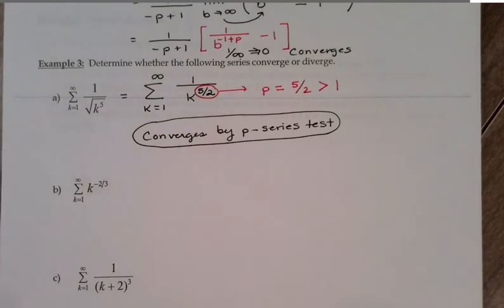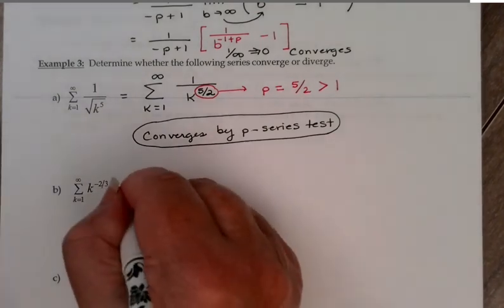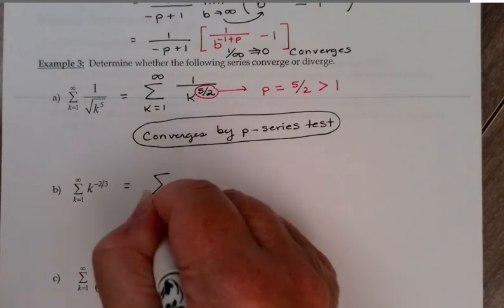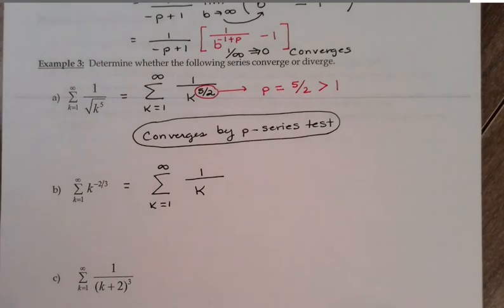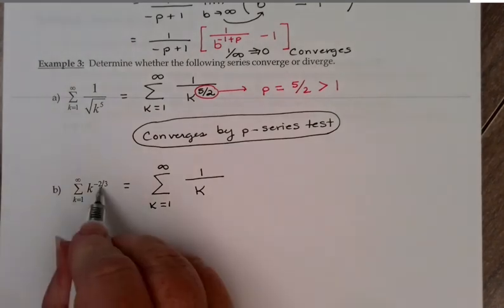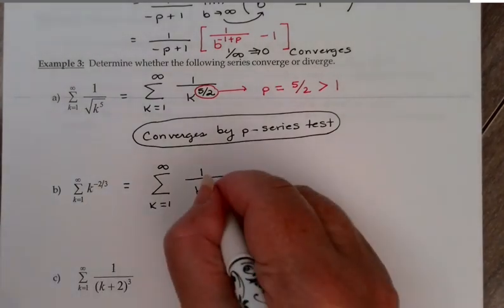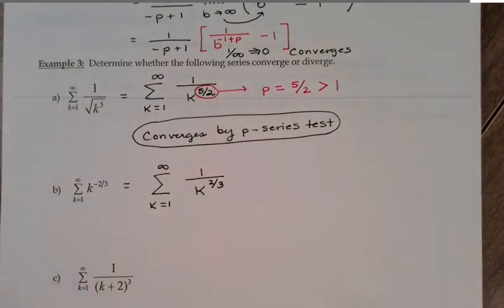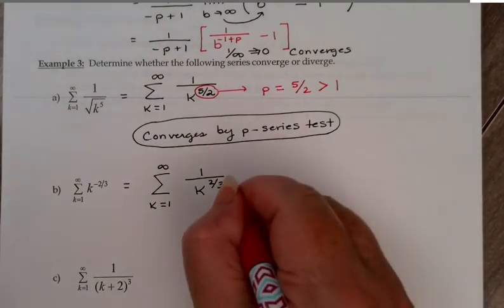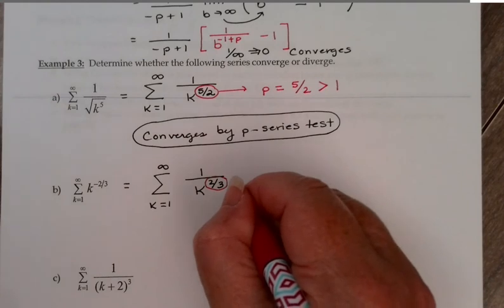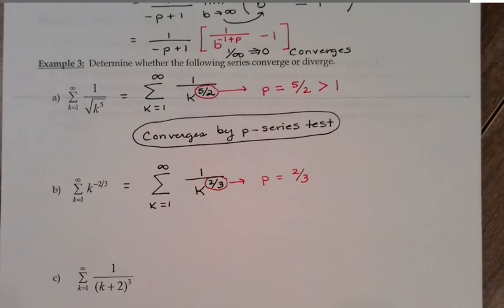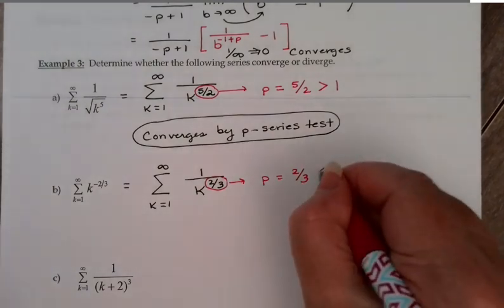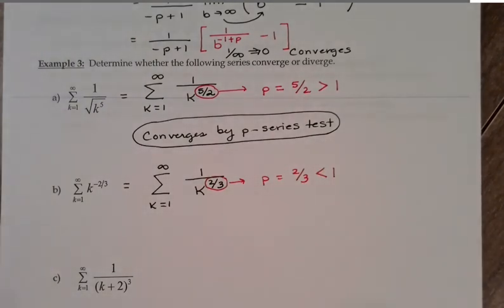Next one. Again, rewrite it so it looks like the p-series form: 1 over k to a power. When I move the k to the denominator, the exponent becomes positive 2/3. So my p value is 2/3, and of course 2/3 is less than 1. So this one diverges by the p-series test.